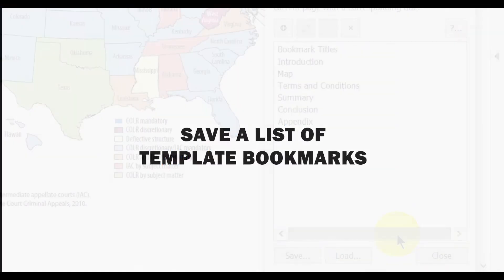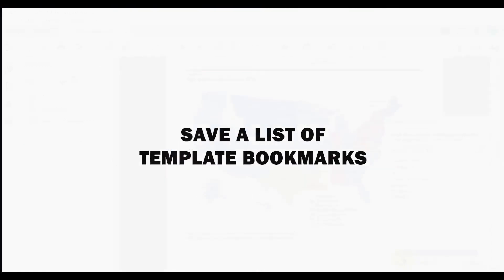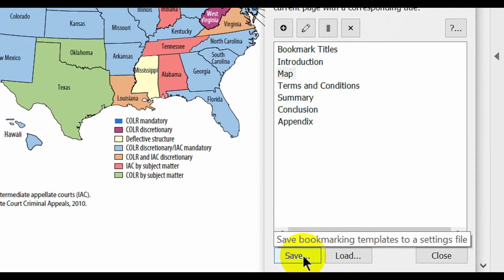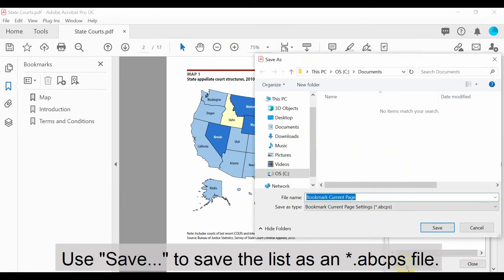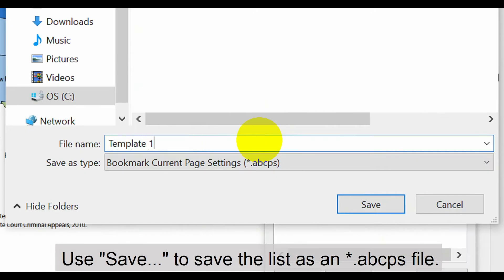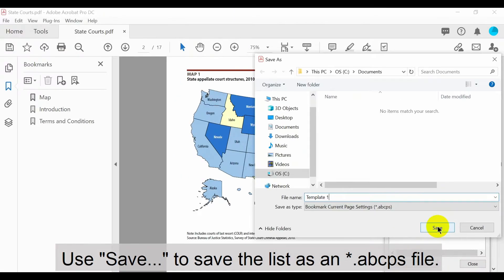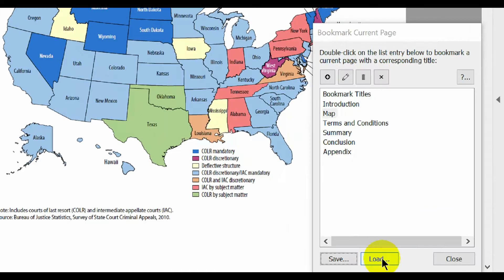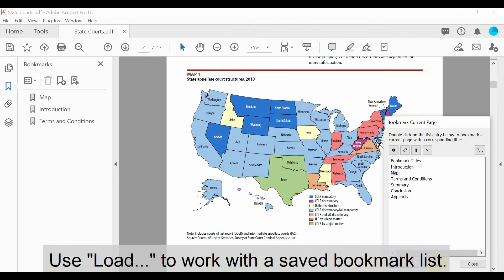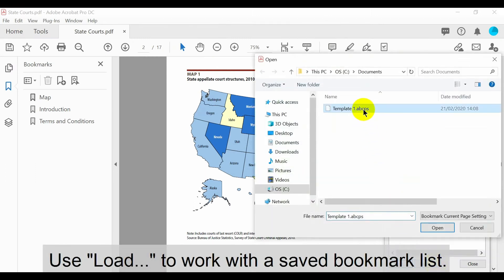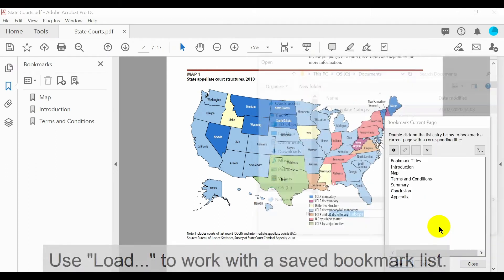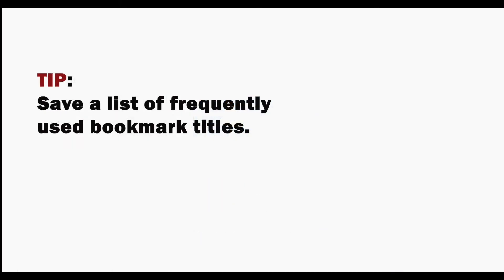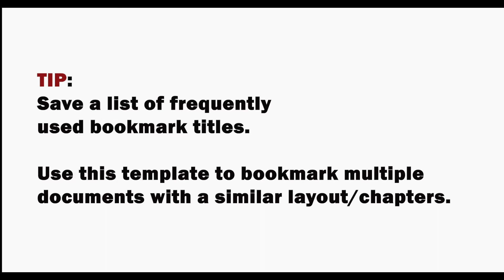Now let's look at how to save a list of template bookmarks. Use the Save button to save the list as a settings file. Use the Load button to work with a previously saved bookmark list. It's useful to save a list of frequently used bookmark titles — you can then use this template to bookmark multiple documents with similar layouts or chapters.